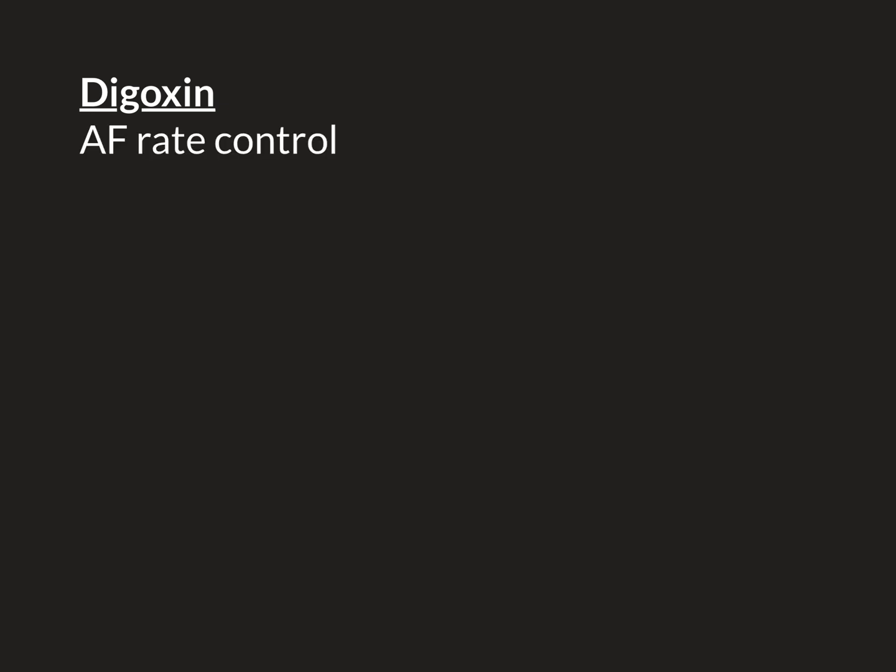This video is designed to follow the video on bisoprolol, so please watch that video prior to watching this one. Digoxin is a wonderful drug for rate controlling AF — atrial fibrillation — if bisoprolol fails to achieve rate control, or if bisoprolol cannot be given, either because the individual has too low blood pressure or because the individual isn't able to take tablets, as bisoprolol is only available in an oral form rather than an intravenous form.